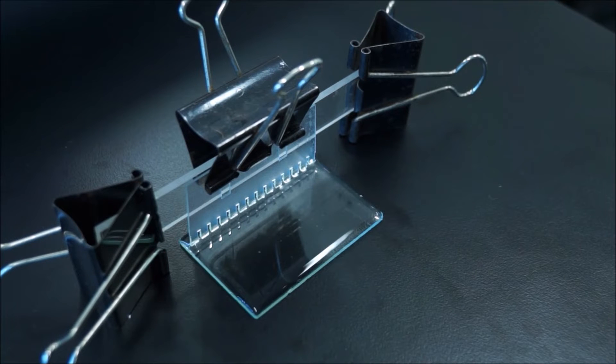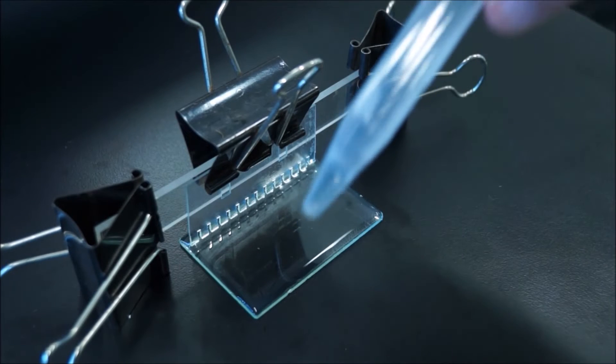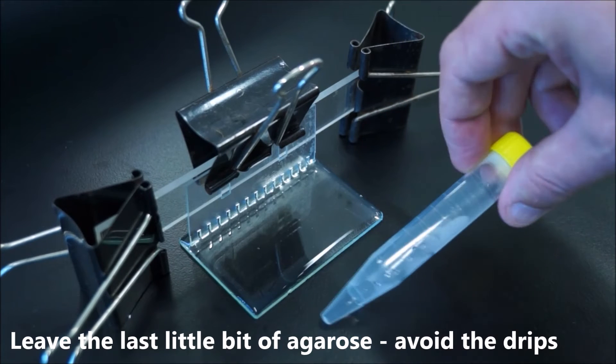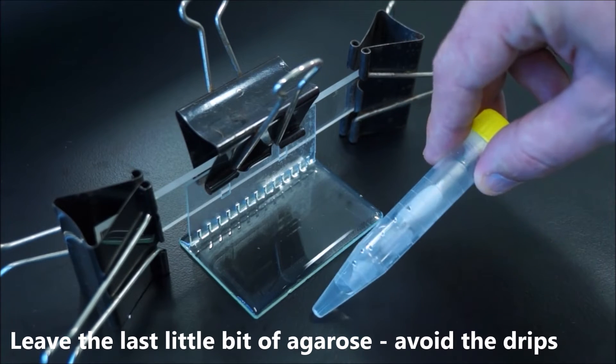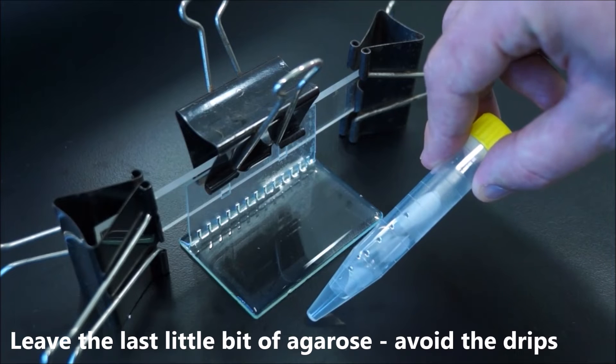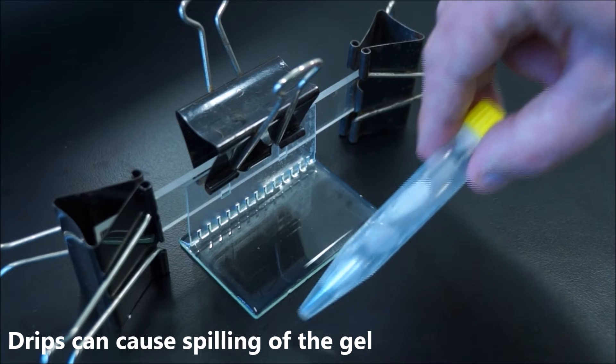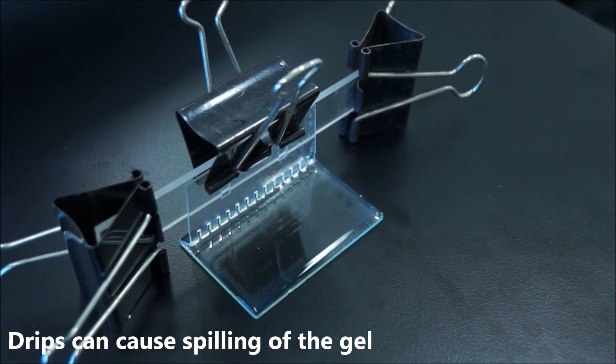If it pours off the edge, as sometimes it does, just let the gel solidify on the bench and we can clean it up once it's solid. You don't have to get every last drop out of the yellow capped tube. When it starts dripping, just take the yellow capped tube away. The drips might set up some waves and spill the agarose over.